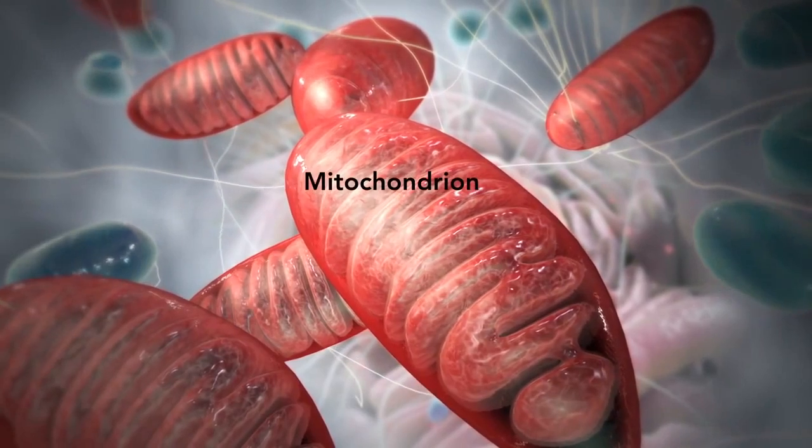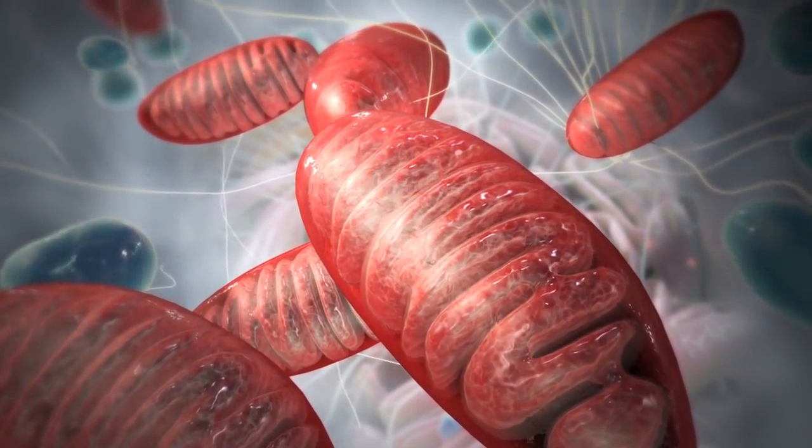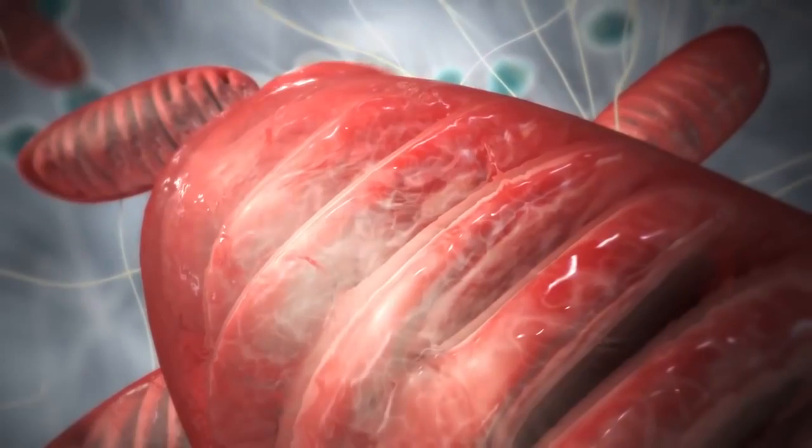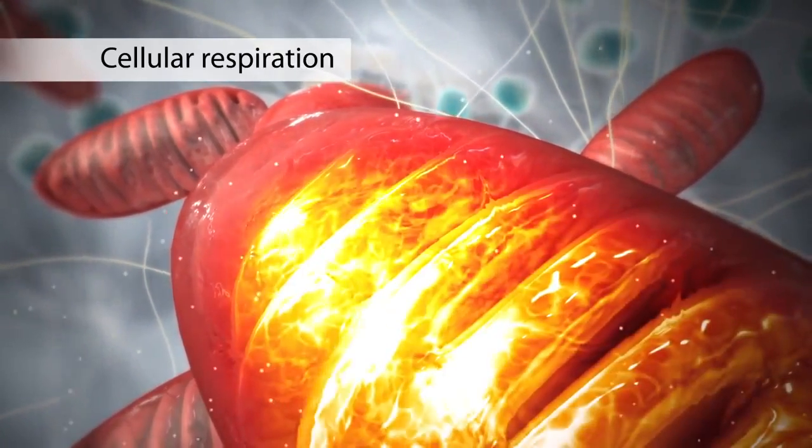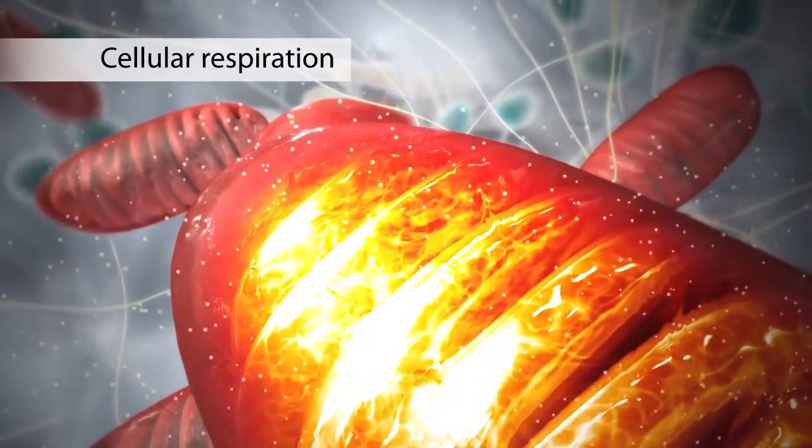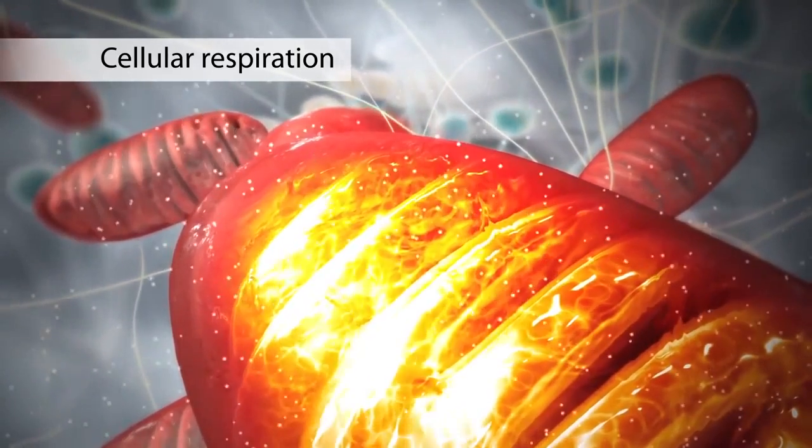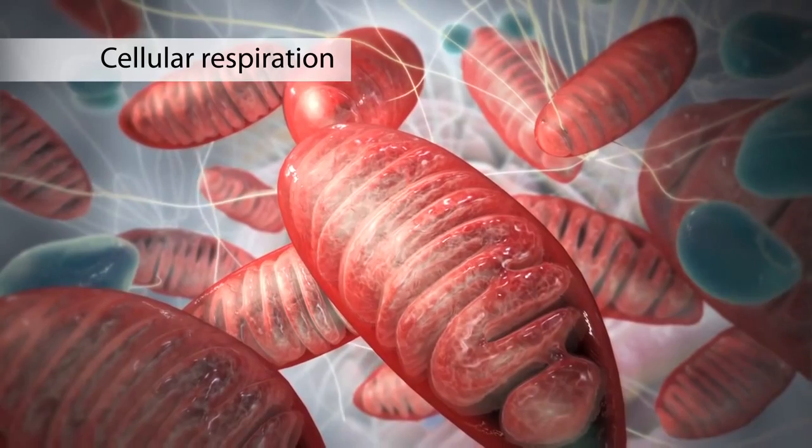The mitochondrion is an organelle that is the powerhouse for both animal and plant cells. During a process called cellular respiration, the mitochondria make ATP molecules that provide the energy for all of the cell's activities. Cells that need more energy have more mitochondria.